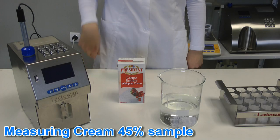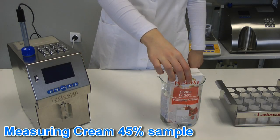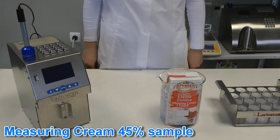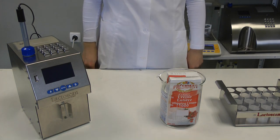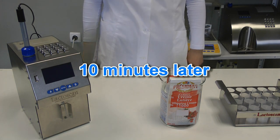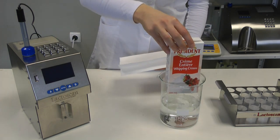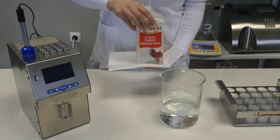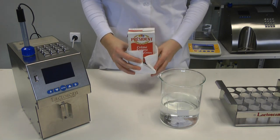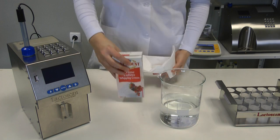For calibration with cream 45%, take the cream sample, put it in vessel with warm water for about 10 minutes, shake it carefully, and use it for measurement. Please pay attention that the analyzer needs cleaning after cream measurement.